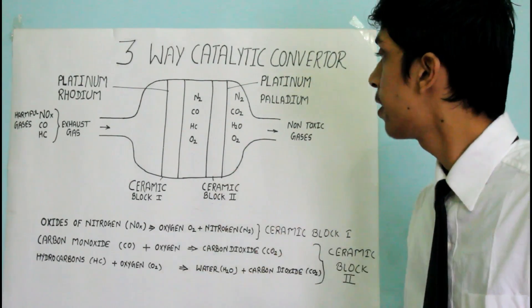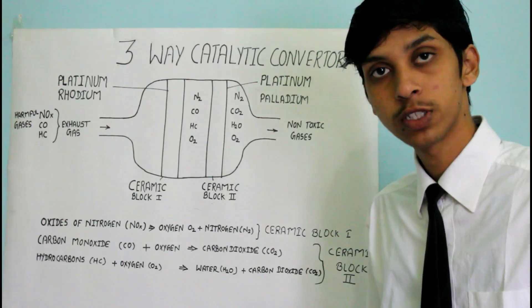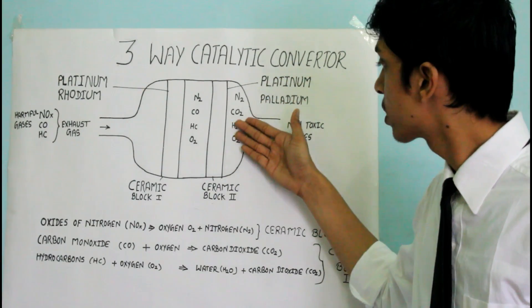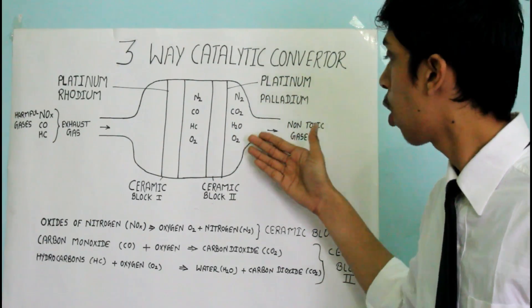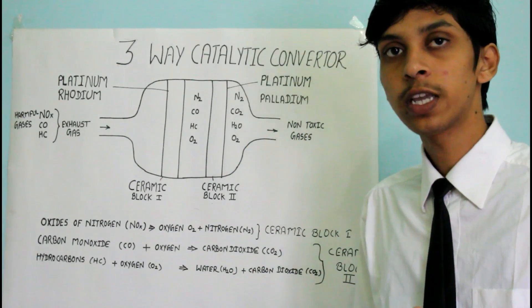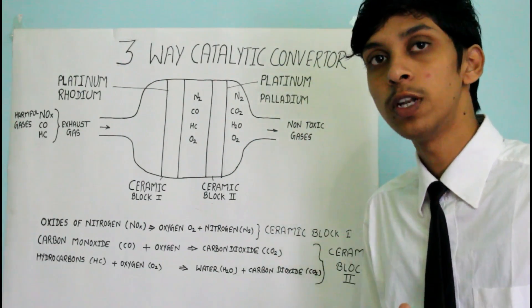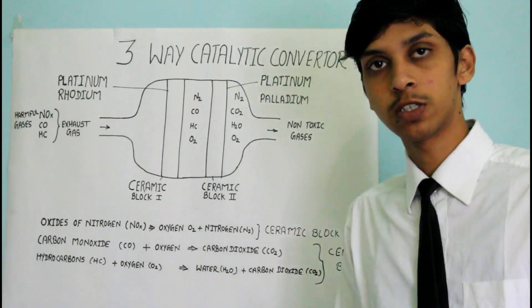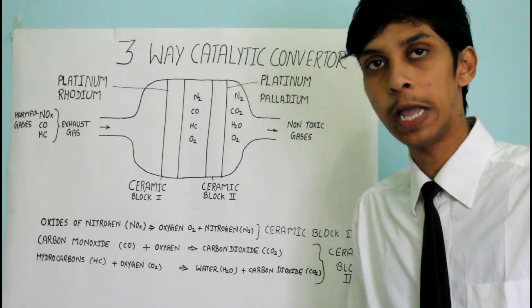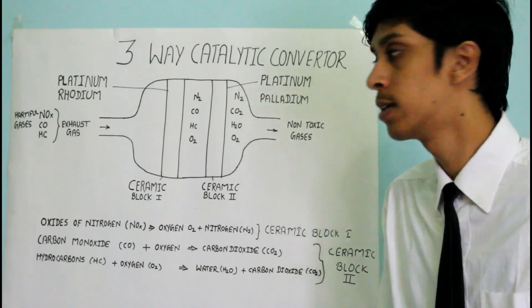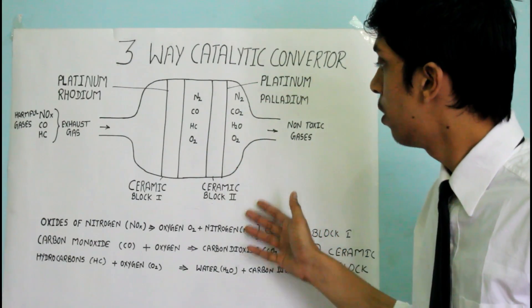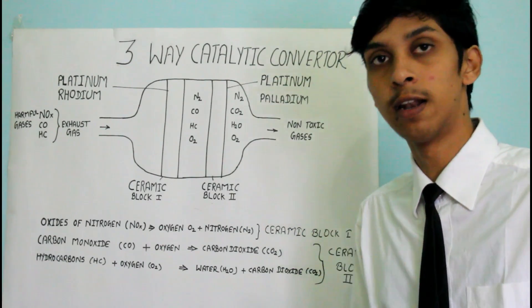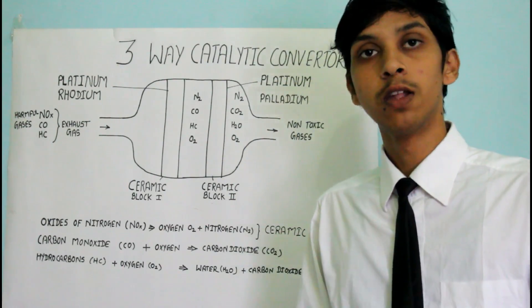So this is the catalytic converter, through which NOx, carbon monoxide, and hydrocarbons are converted — producing nitrogen, carbon dioxide, water vapors, and oxygen. These non-toxic gases are then released into the rest of the exhaust system. This is how the catalytic converter converts harmful gases into non-toxic and less harmful gases.